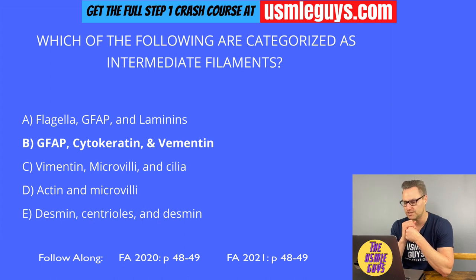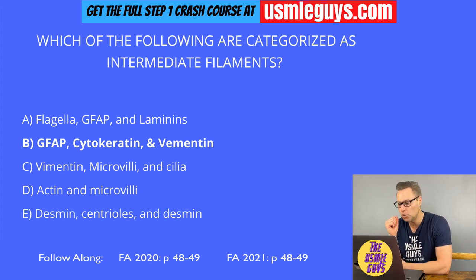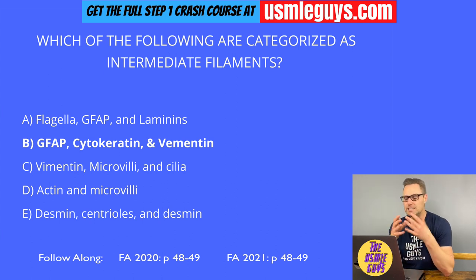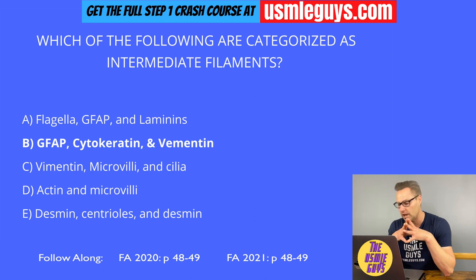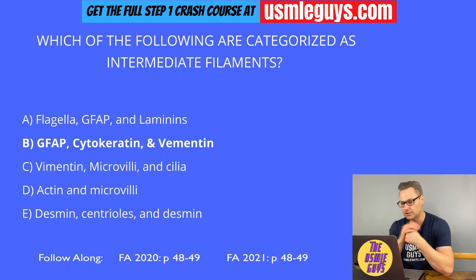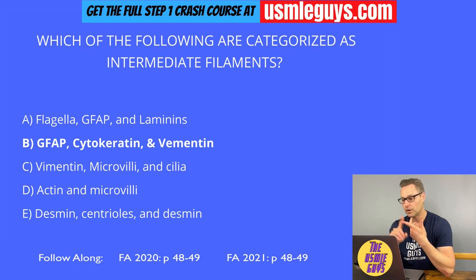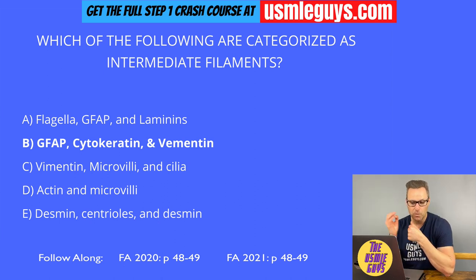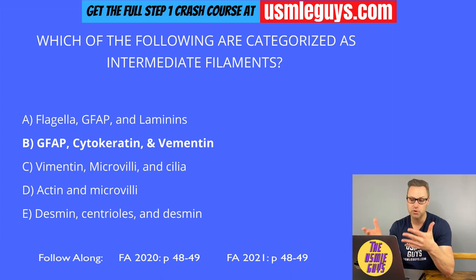The structure of cilia features that classic nine doublet plus two singlet arrangement of microtubules. The basal body consists of nine microtubule triplets with no central microtubules. Axonemal dyneins are associated with microtubule doublets within cilia and flagella, and ATPases provide the motive force by driving sliding microtubules with respect to each other. The most often tested pathology here is the autosomal recessive inherited dynein arm defect known as Kartagener syndrome.